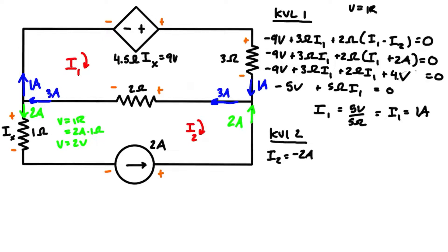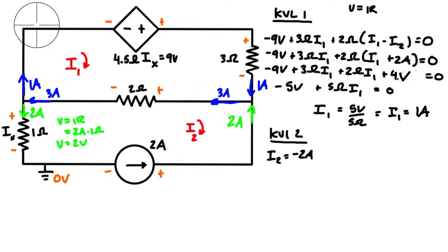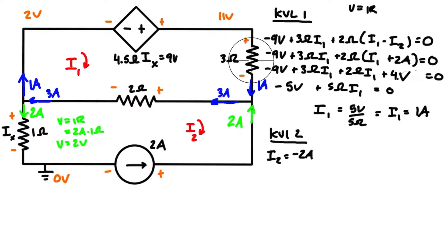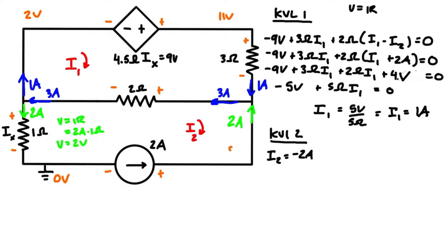Now we draw a ground. If you don't know where to place it, try somewhere and experiment until you get positive voltages. I already know it goes here. We define this node as zero volts. The voltage drop across the one-ohm resistor is two volts, so everything above it is two volts higher than ground. The dependent source jumps nine volts, so that node is two plus nine equals eleven volts above ground.